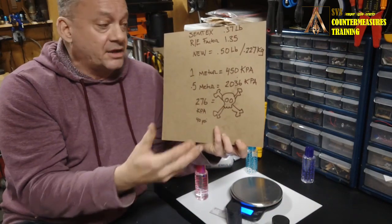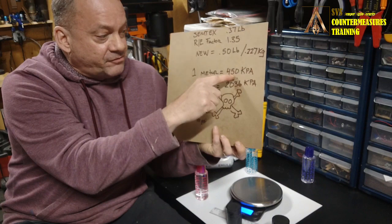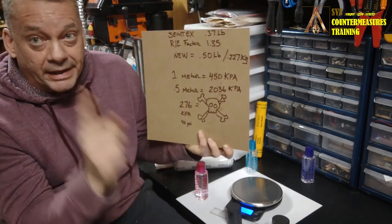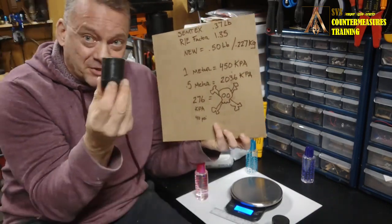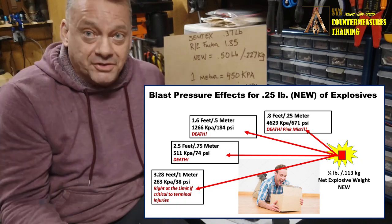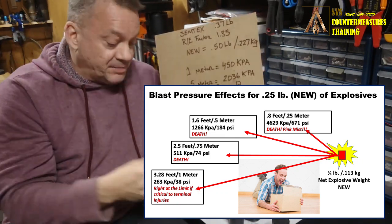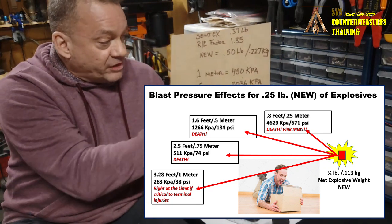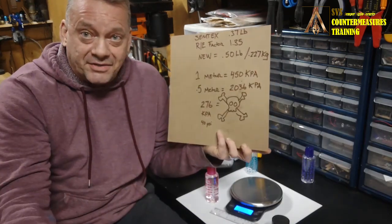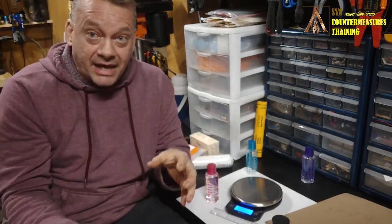I ran this through the UN blast calculator. At one meter, that 0.5-pound net explosive weight generates about 450 kPa of blast pressure. Critical to terminal injuries start at 276 kPa, so at one meter you're probably going to die from this much explosive. For mail screening, the package is going to be much closer to you when you're opening it. At 0.5 meters, blast pressure shoots up to 2,036 kPa — way in excess of the critical to terminal injury threshold for the human body.